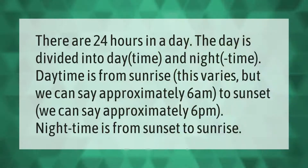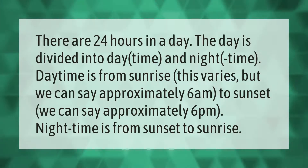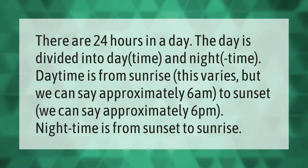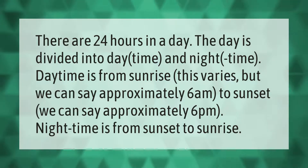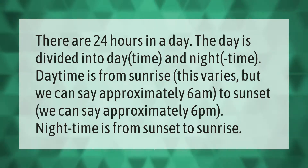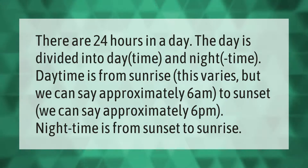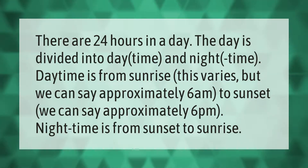There are 24 hours in a day. The day is divided into daytime and nighttime. Daytime is from sunrise — approximately 6 a.m. — to sunset — approximately 6 p.m. Nighttime is from sunset to sunrise.